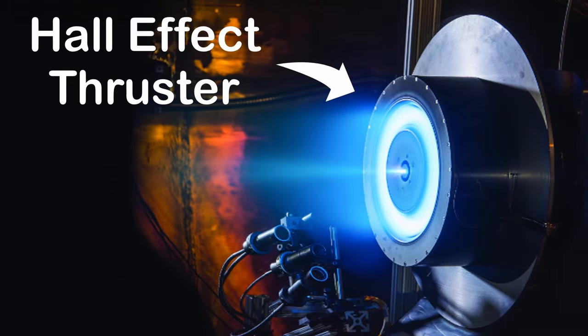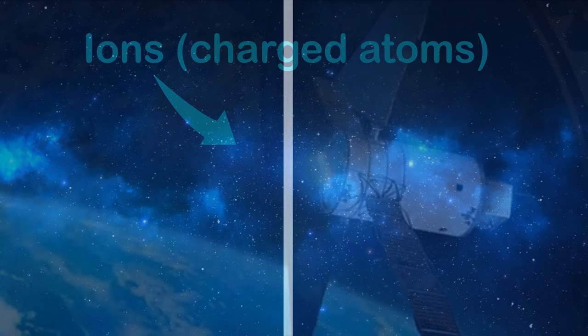The Hall Effect Thruster produces thrust by firing charged atoms into space. But unlike the gridded ion thruster, which suffers from grid erosion, the Hall Thruster works without a grid.